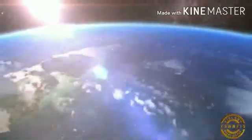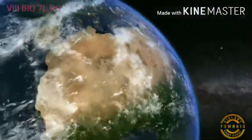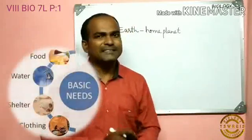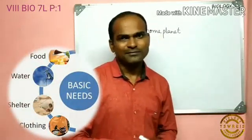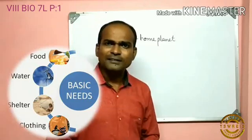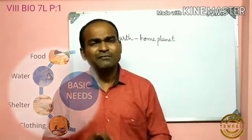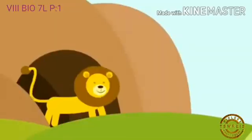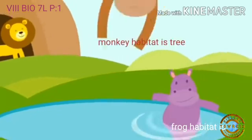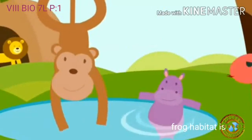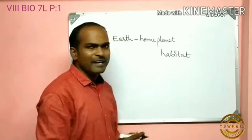Earth is a home planet for most of our living organisms. These organisms, to exist in the universe, require basic needs like food, water, shelter, and clothing. Usually the organism stays in places that meet all these requirements necessary for life. The place where the organism fulfills its basic needs is called a habitat.